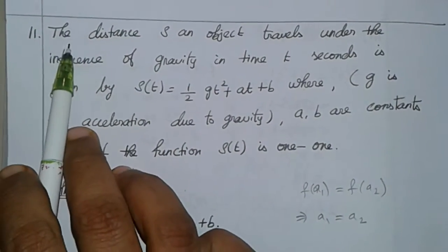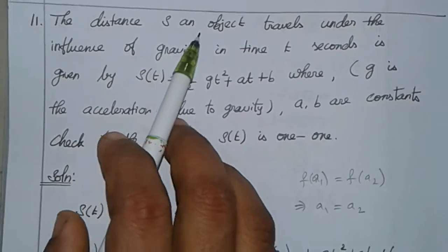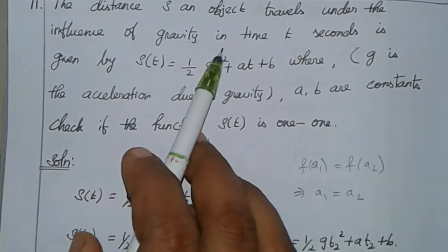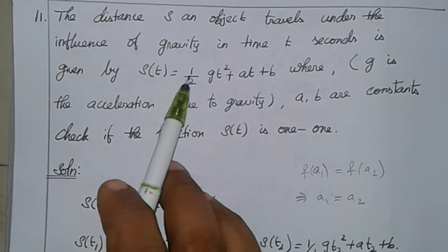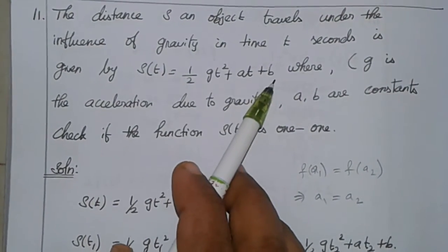This is course number 11. The distance s an object travels under the influence of gravity in time t seconds is given by s(t) = (1/2)gt² + at + b.